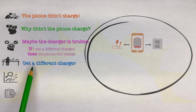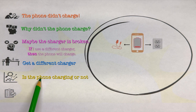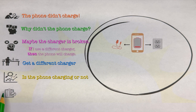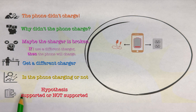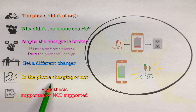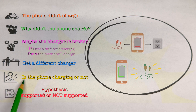After running the experiment — changing the charger — we analyze the results to see if the phone is charging or not. Then we do the last step: the conclusion. If we notice the phone is now charging, the conclusion is that the hypothesis is supported — the charger was broken, we changed it, and the phone started charging.